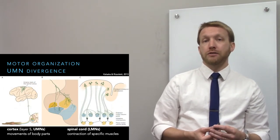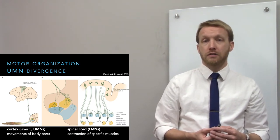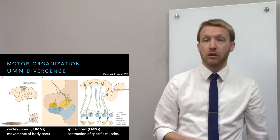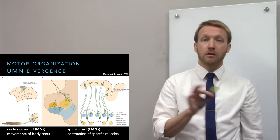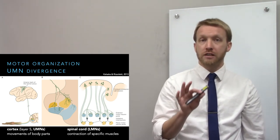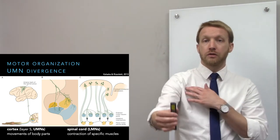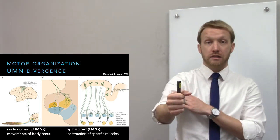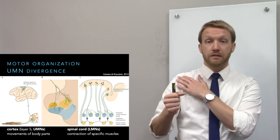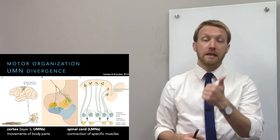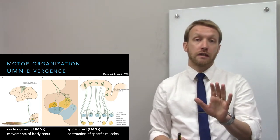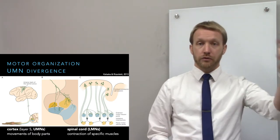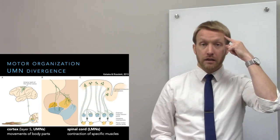Upper motor neurons also diverge — not only do multiple upper motor neurons control the same lower motor neurons, but one upper motor neuron can control multiple lower motor neurons. Upper motor neurons don't care about muscles; they care about moving specific body parts. If you want to bring your hand closer to your body, several muscles are involved, so you need to control many lower motor neurons. The same lower motor neuron — the same muscle — can be involved in multiple movements.